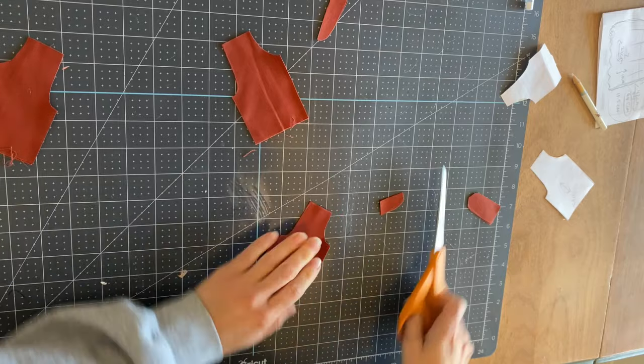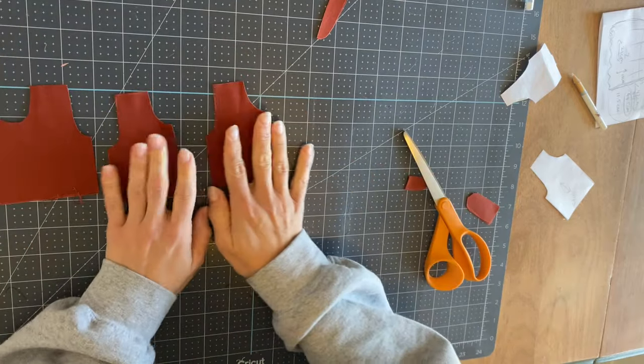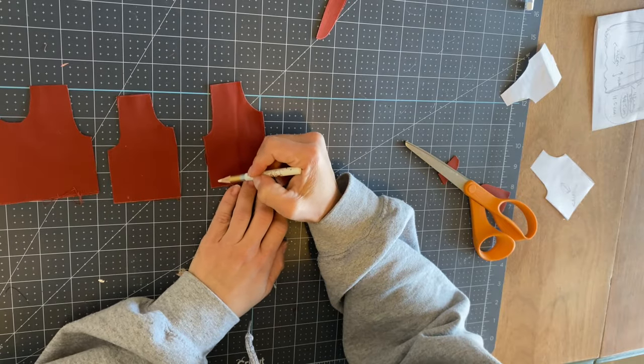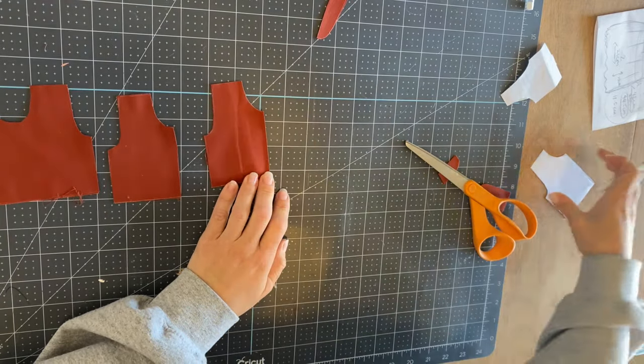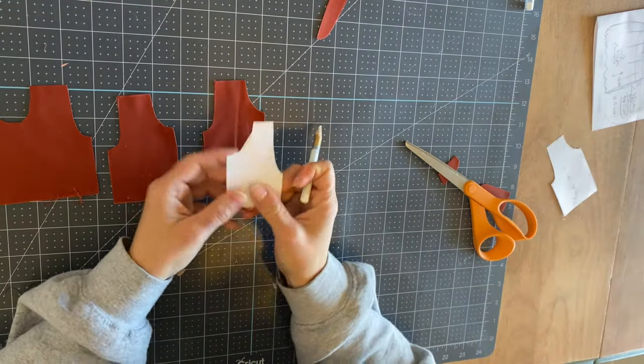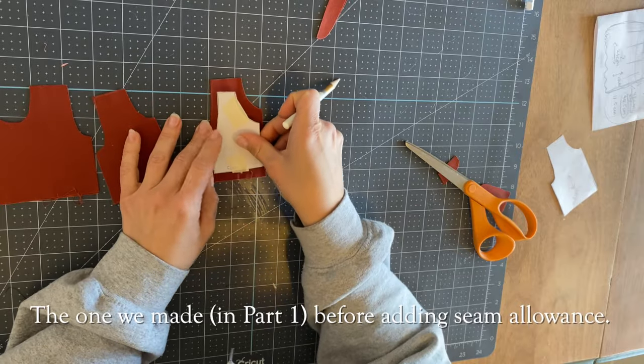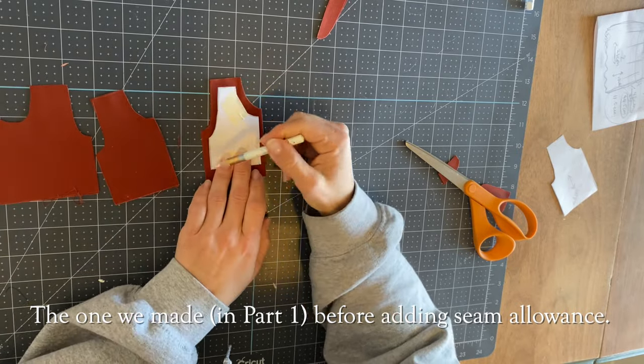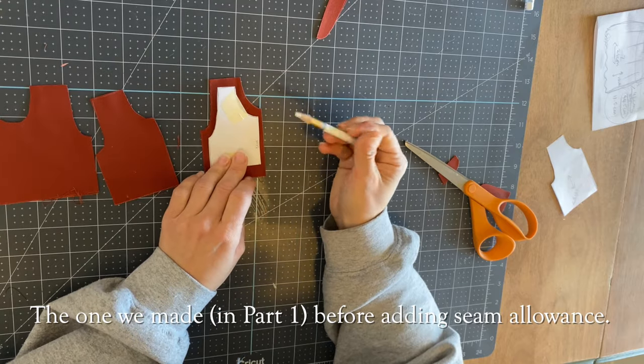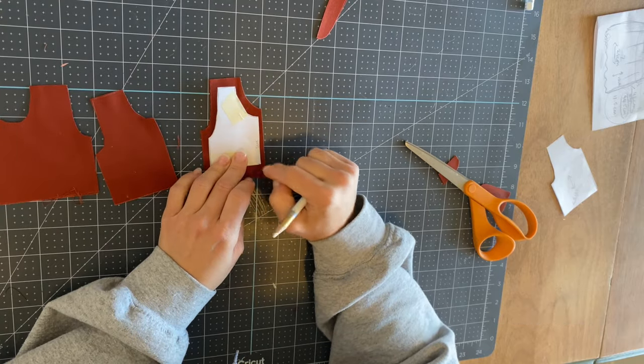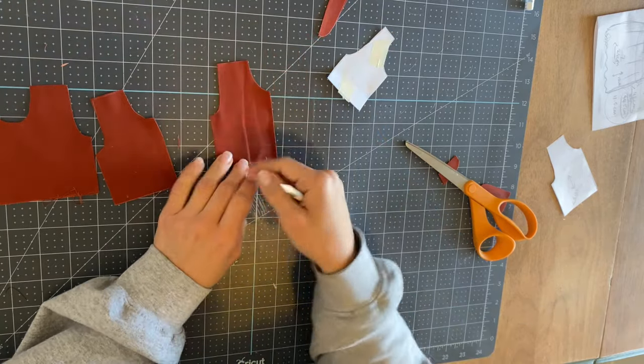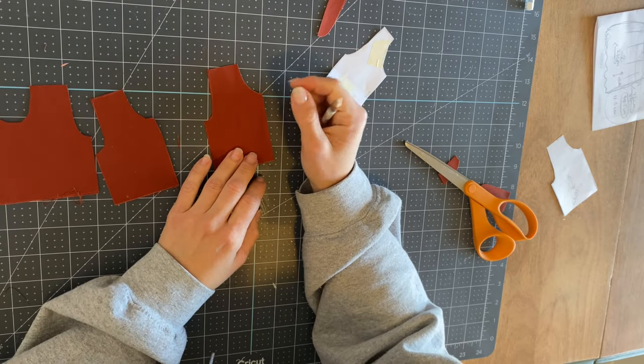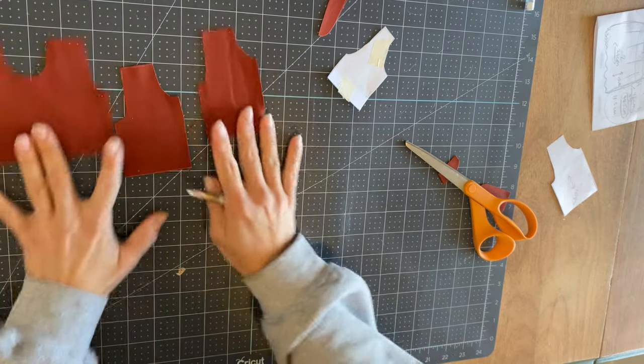So if you're good at sewing things with the seam allowance, then you don't have to worry. But if you feel like you need an extra guide, you could even take your previous pattern piece and trace the lines in between your cut out fabric so you have a confident path of where you need to sew. I'm not going to do that though. I'm just going to sew it just like this.